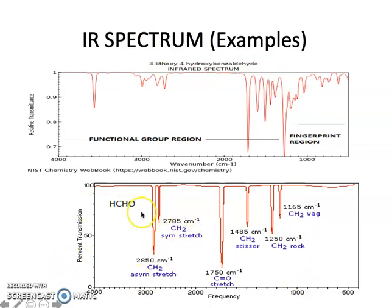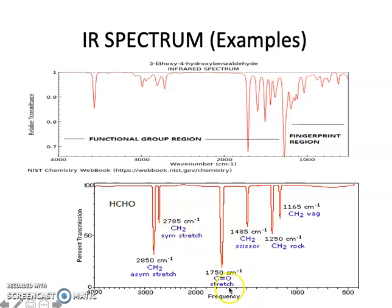The IR spectrum of formaldehyde shows peaks corresponding to its covalent bonds: CH₂ and C=O. The CH₂ asymmetric stretch appears at 2850 per centimeter, the CH₂ symmetric stretch at 2785 per centimeter, and the C=O stretch at 1750 per centimeter, along with some other peaks. By knowing the peak frequencies of different functional groups, we can identify functional groups present in an unknown organic compound from the peak positions.